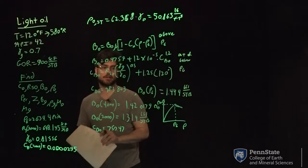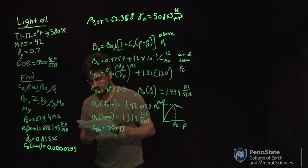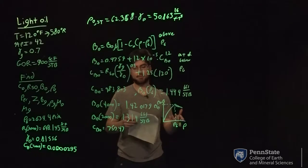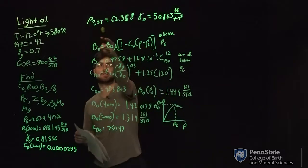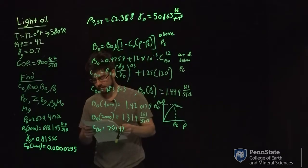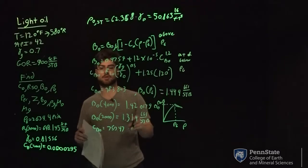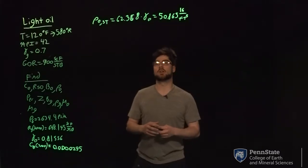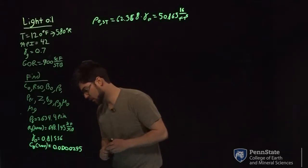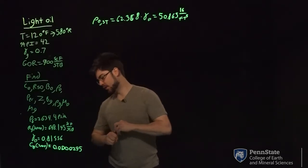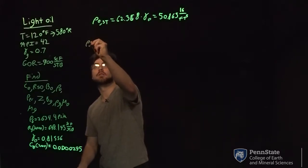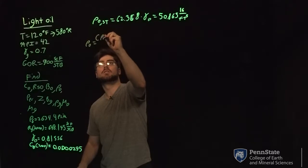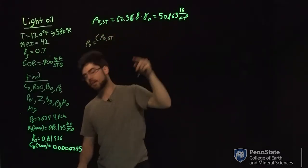Now that we have these three BO values, we can find the density of our oil at bubble point, above bubble point, and below bubble point. To find the density of oil at and below bubble point, we use equation 3.51, which uses RSO at your pressure of interest.